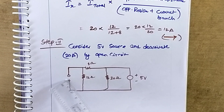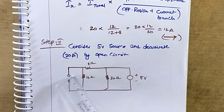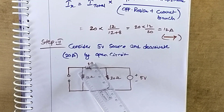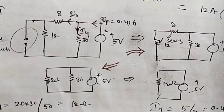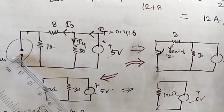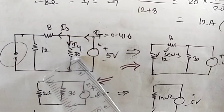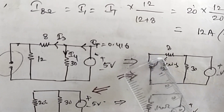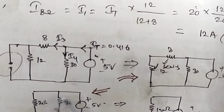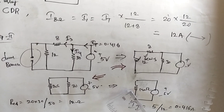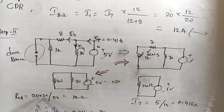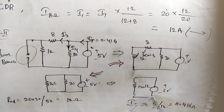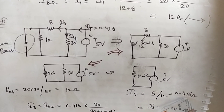Step two: consider the 5 volt voltage source active and deactivate the 20 amp current source by open circuit. When open circuited, the current becomes zero. The circuit now has 5 volts with 30 ohm, 12 ohm, and 8 ohm. The 12 ohm and 8 ohm are in series giving 20 ohm; then 20 ohm and 30 ohm are in parallel, giving an equivalent resistance of 20 × 30 / 50 = 12 ohms.